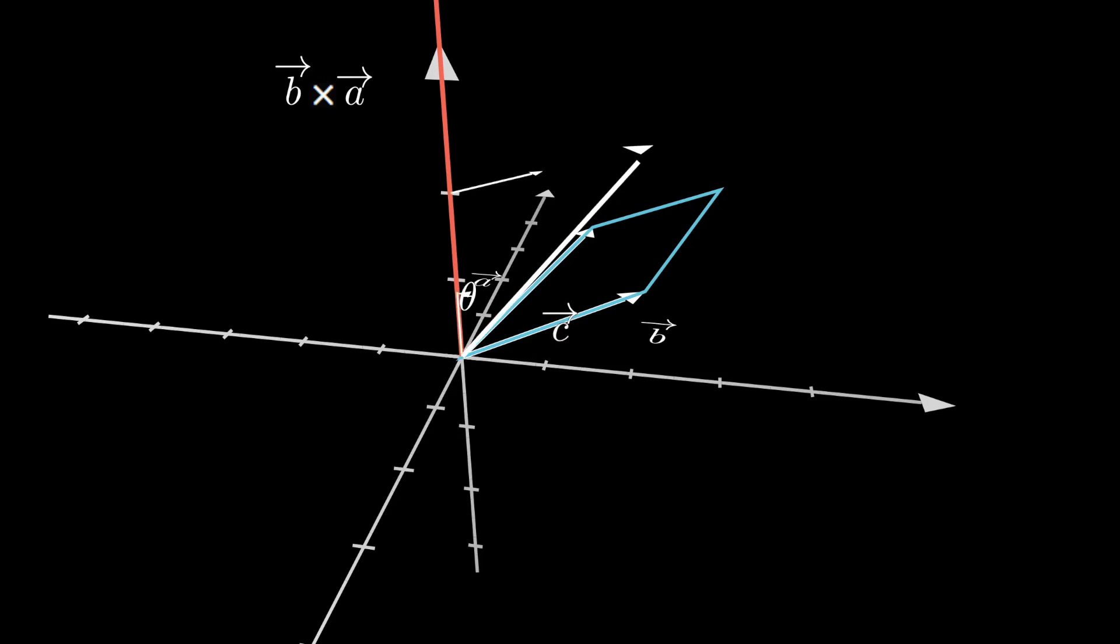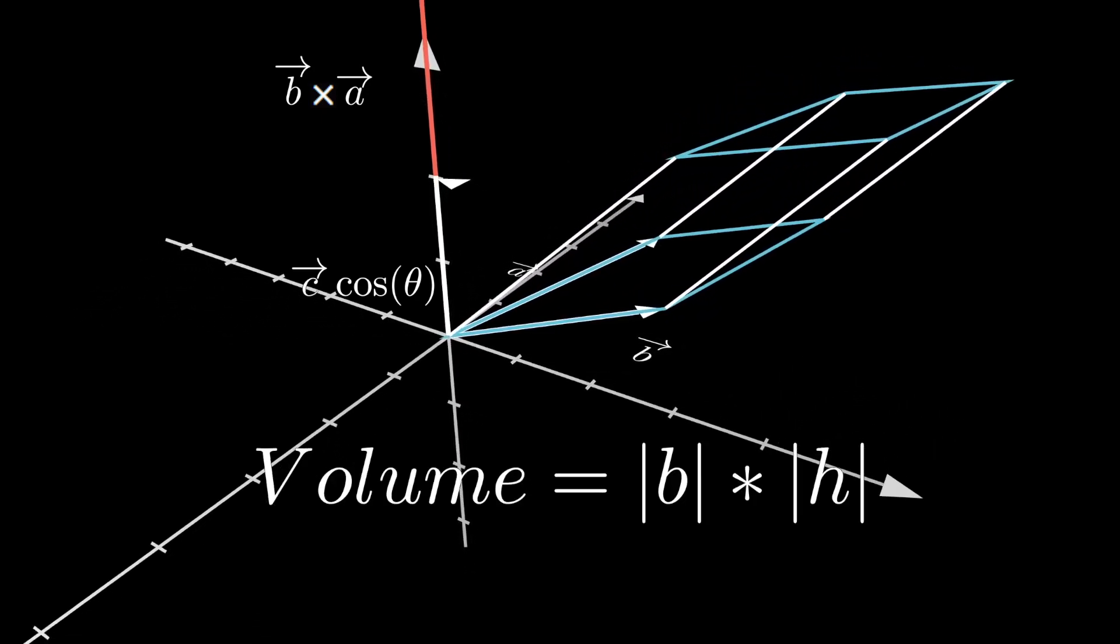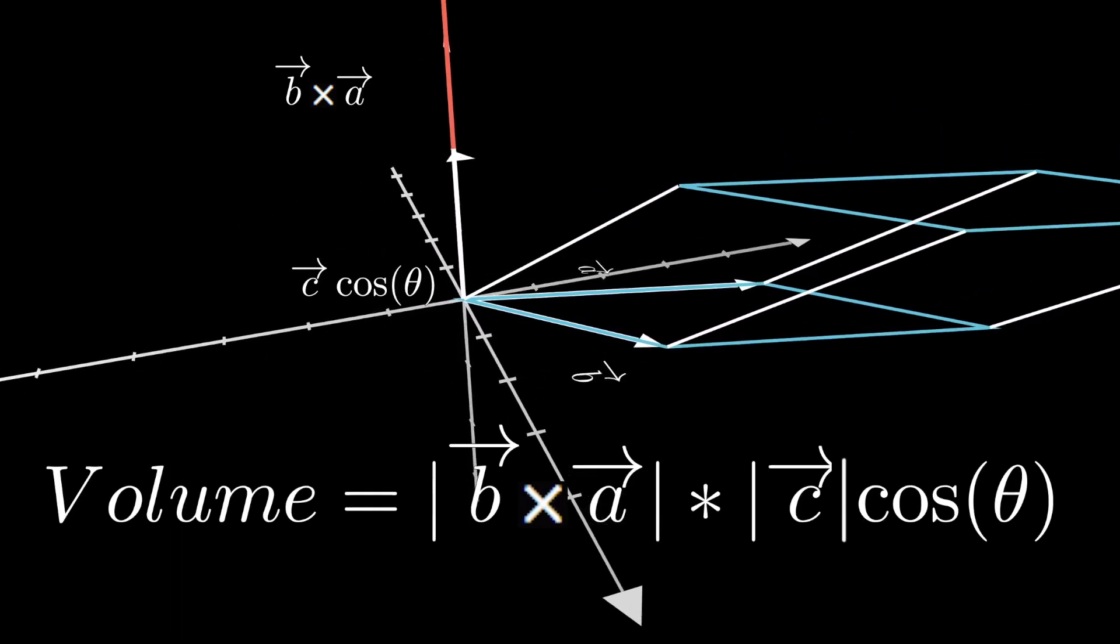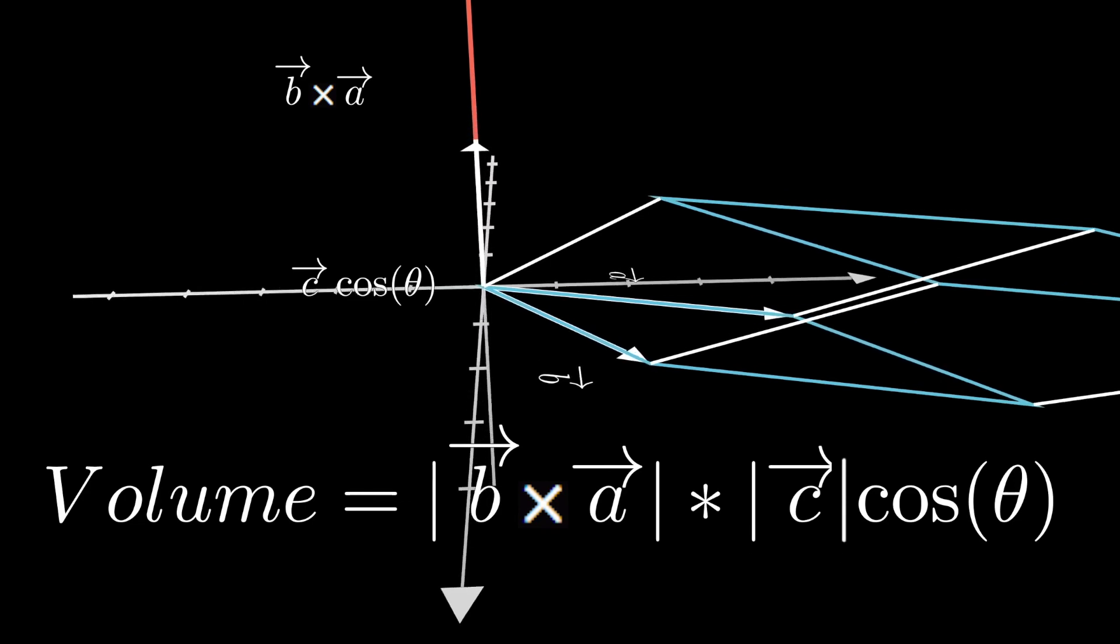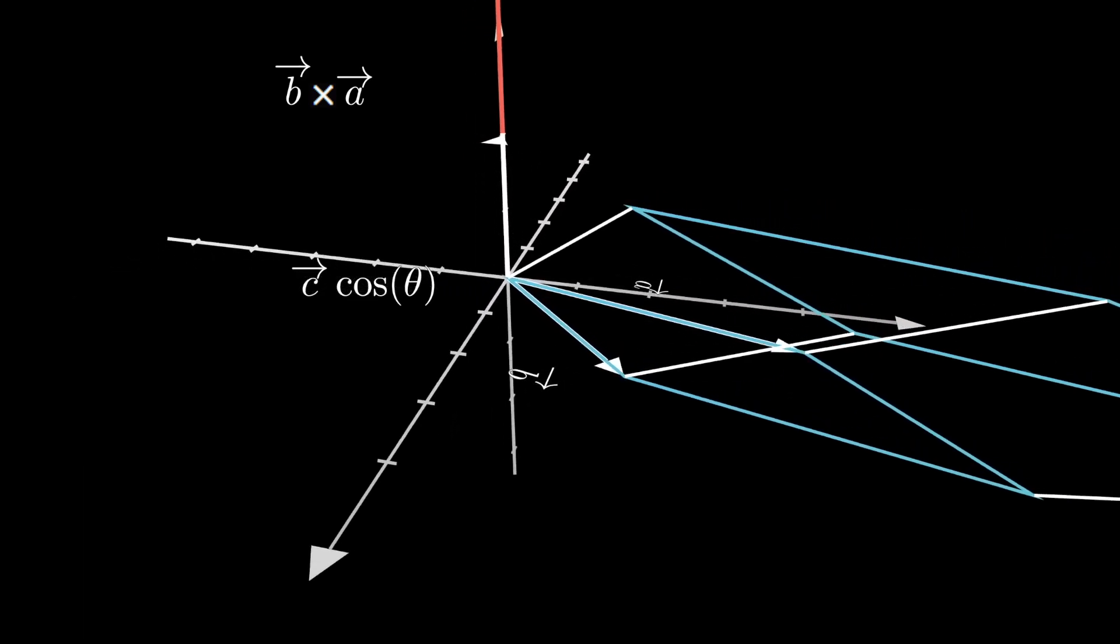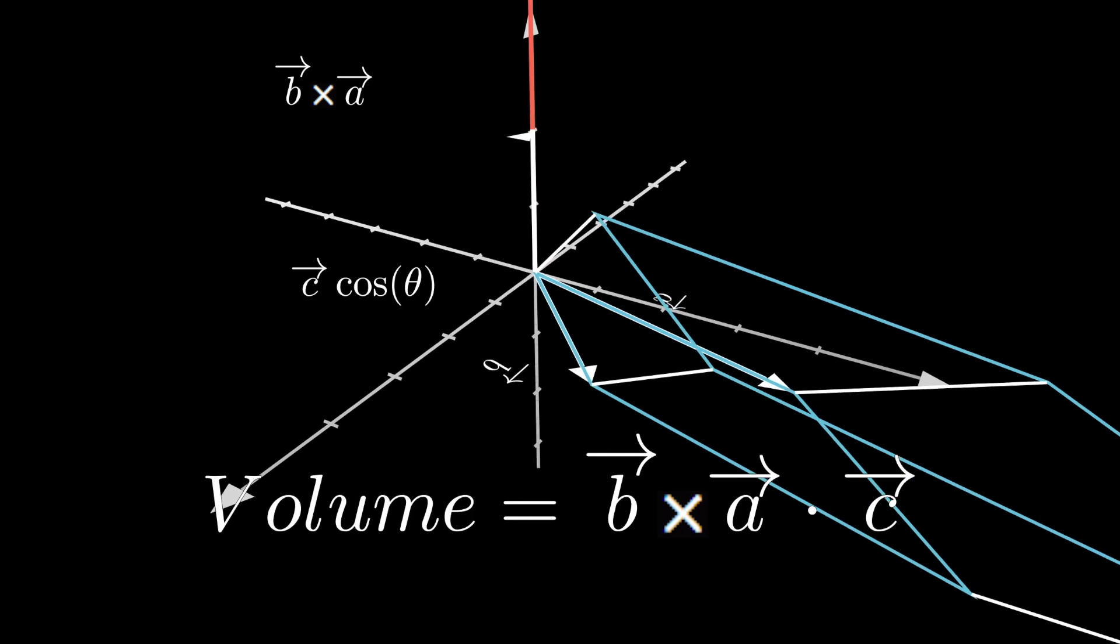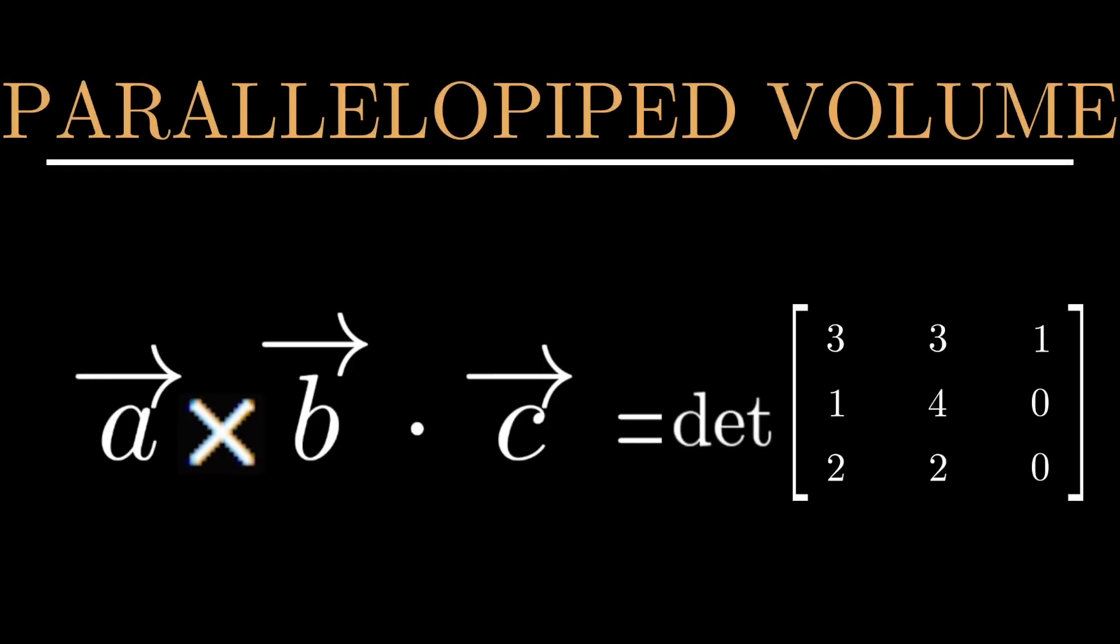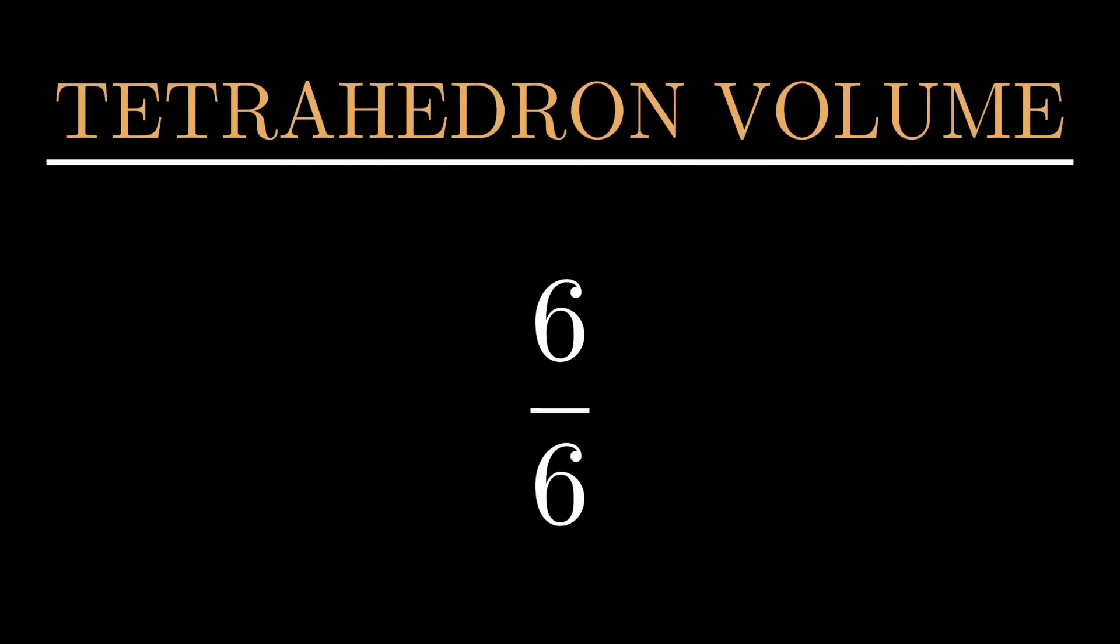You can find the height of that using C arrow times cosine theta, and then calculate the volume by getting the magnitude of the base times the magnitude of the height, which is the same thing as the magnitude of B arrow cross A arrow times the magnitude of C arrow times cosine theta. So the volume ends up equaling B arrow cross A arrow dot C. From before, we know that that ends up equaling the determinant of the matrix of the three vectors that determine the parallelepiped. You can take the determinant of this matrix, and it ends up equaling six. The tetrahedron's volume is one-sixth of a parallelepiped, so you end up getting one.